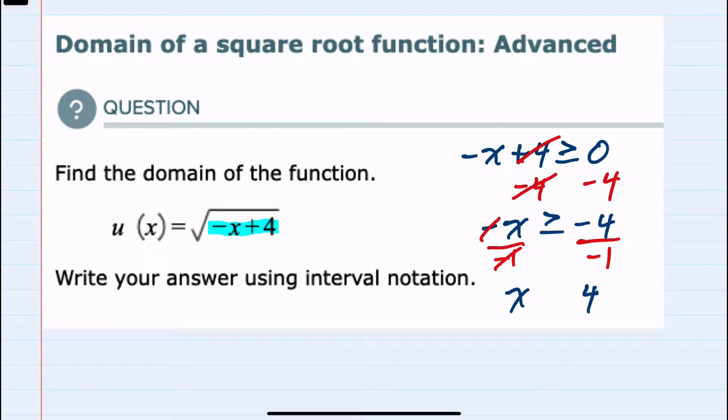However we have to remember that whenever we multiply or divide inequalities by a negative number the direction of that inequality switches. So we didn't have to worry about this when we were subtracting the 4 over. But when you multiply or divide by a negative in an inequality you change the direction of that inequality. And so we have x is less than or equal to 4.